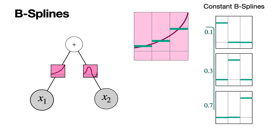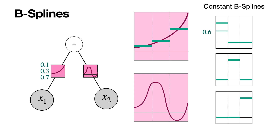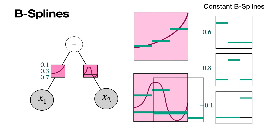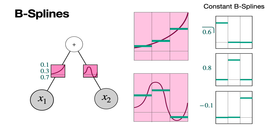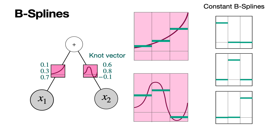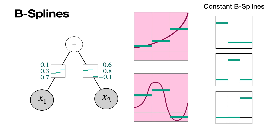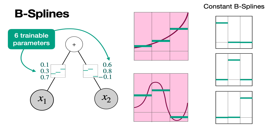For the second function, I need 0.6 times the first B-spline plus 0.8 times the second B-spline plus minus 0.1 times the third B-spline. These numbers can be negative, no problem. When I add them I get an approximation of the second function, and the knot vector is 0.6, 0.8, and negative 0.1 — the three parameters corresponding to that edge. We didn't get the exact function, but we approximated it decently with six total parameters, vastly simplifying the functions while still getting something good.